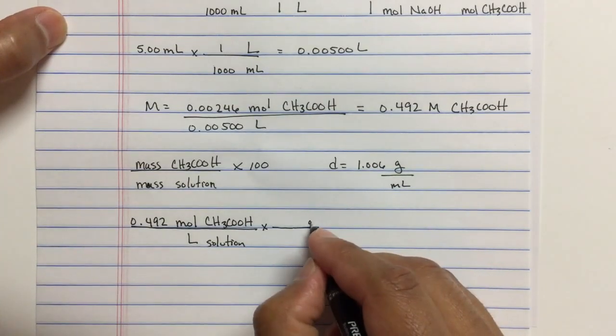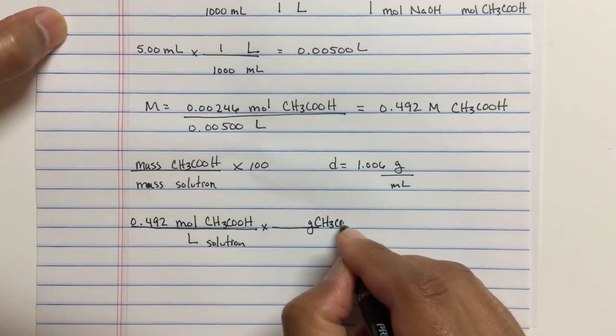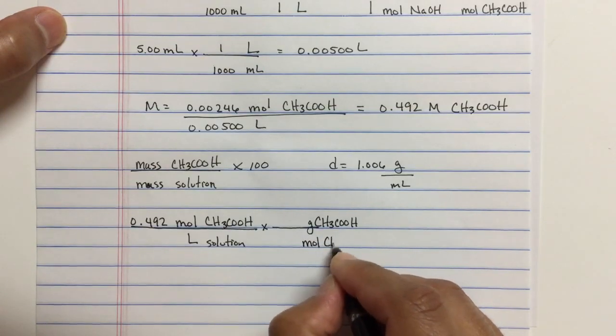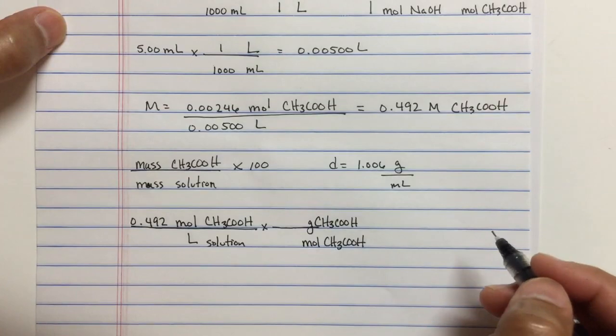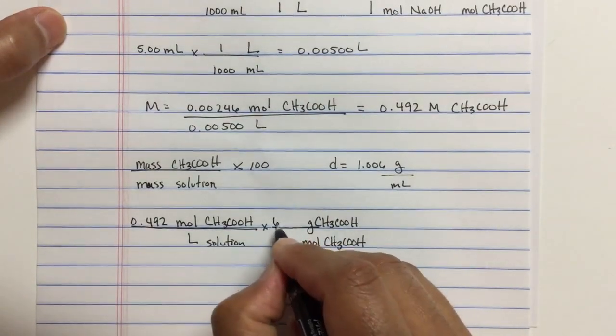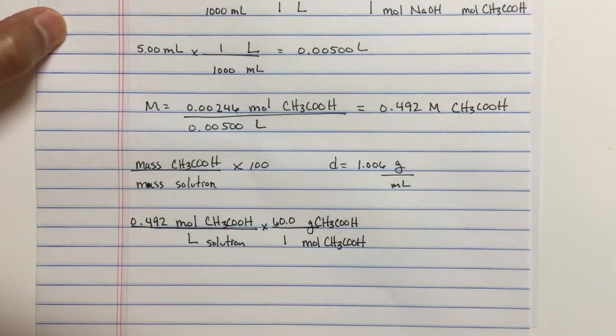So, we're going to convert units in the numerator and denominator. So, we'll go ahead and do the numerator first. Let's convert to grams of the acetic acid and cancel mol. This is the molar mass of acetic acid. You can go look that up. You can go calculate that on your own. 60 grams per mole.